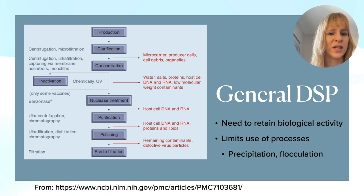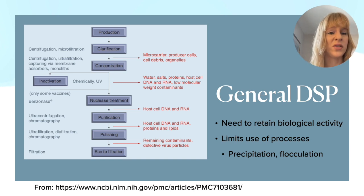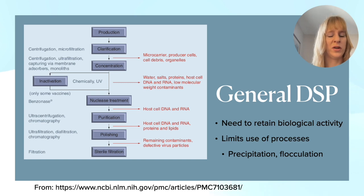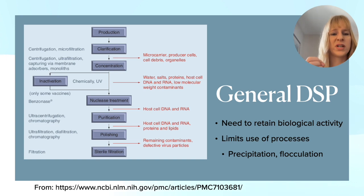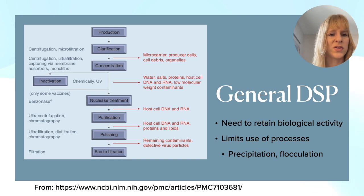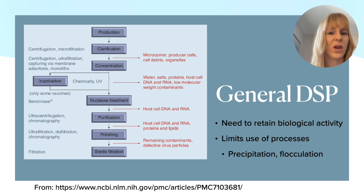The general downstream processing is somewhat different from what you've seen for proteins. First we produce the virus-like particles in a bioreactor, then we harvest, clarify, and concentrate them. The problem is that when you infect your cell line to start producing these viruses, you might have cells that are hollow or only partially filled, so there's a lot of other things to consider. Often you will need to lyse the cells, producing a lot of debris and organelles, so the initial steps tend to be centrifugation or ultrafiltration to remove the bulk of these contaminants.